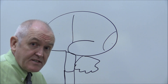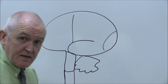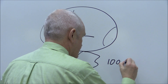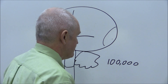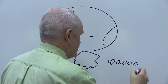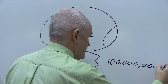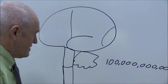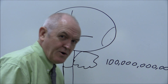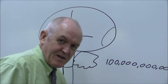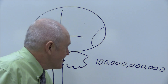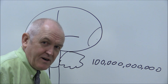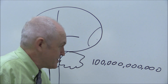We do know the brain contains a hundred thousand million nerve cells — that's the Vilayanur Ramachandran figure, who was one of the leading researchers in neurobiology and disorders of the brain.